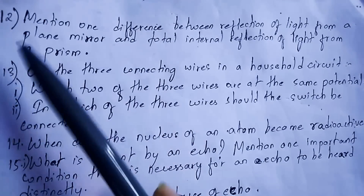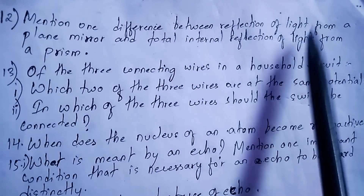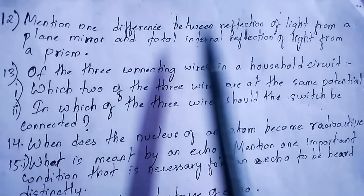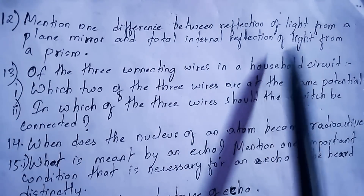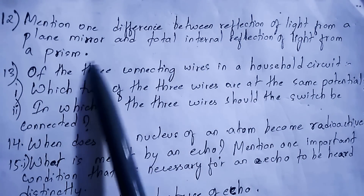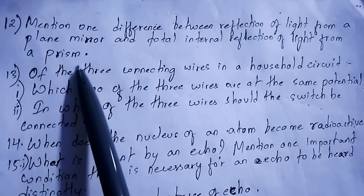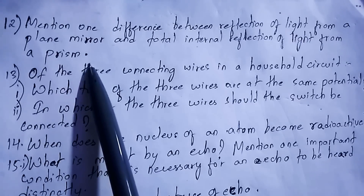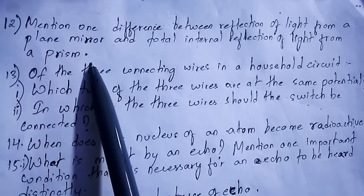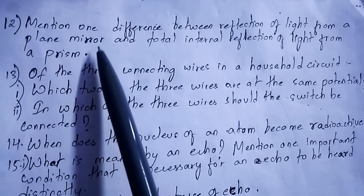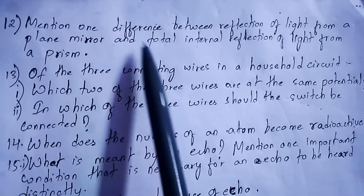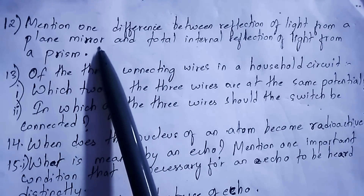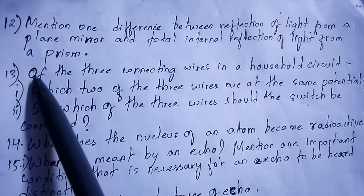Question number 12: mention one difference between reflection of light from a plane mirror and total internal reflection of light from a prism. Reflection from a plane mirror depends upon the polishing of the surface, whereas in a prism it does not depend on polishing. Also, in a prism light is totally reflected and not absorbed, but in a plane mirror a little amount of light is absorbed — it is not 100% reflected.